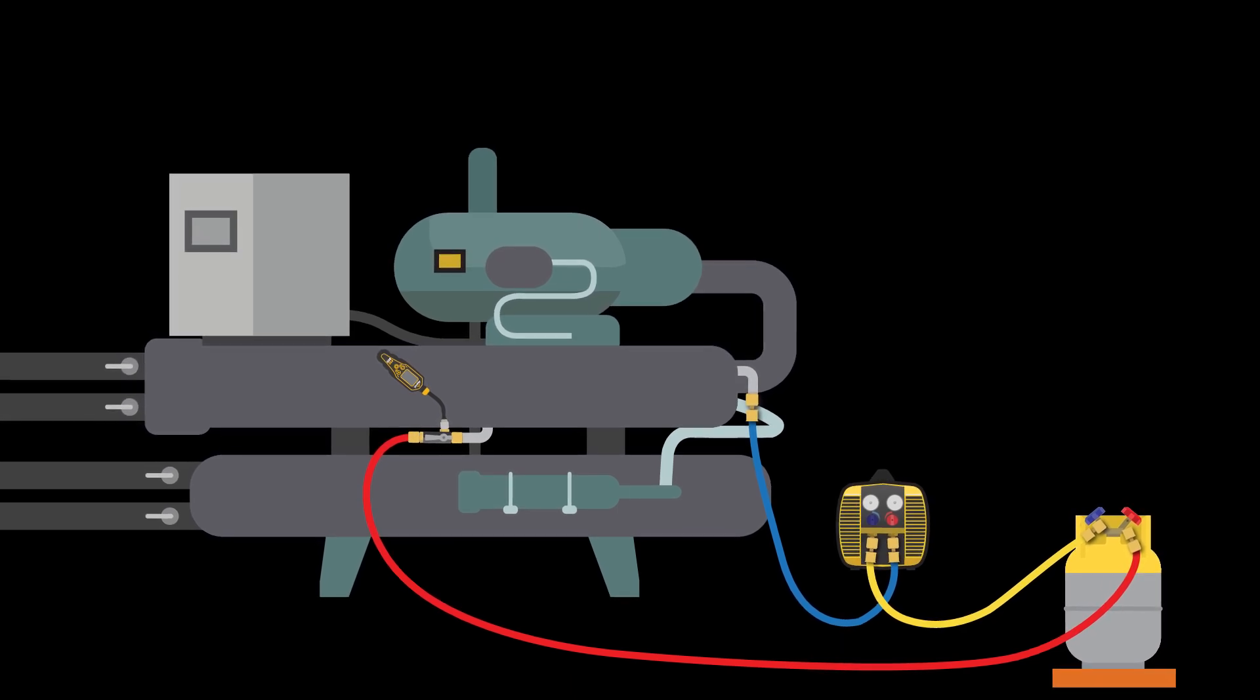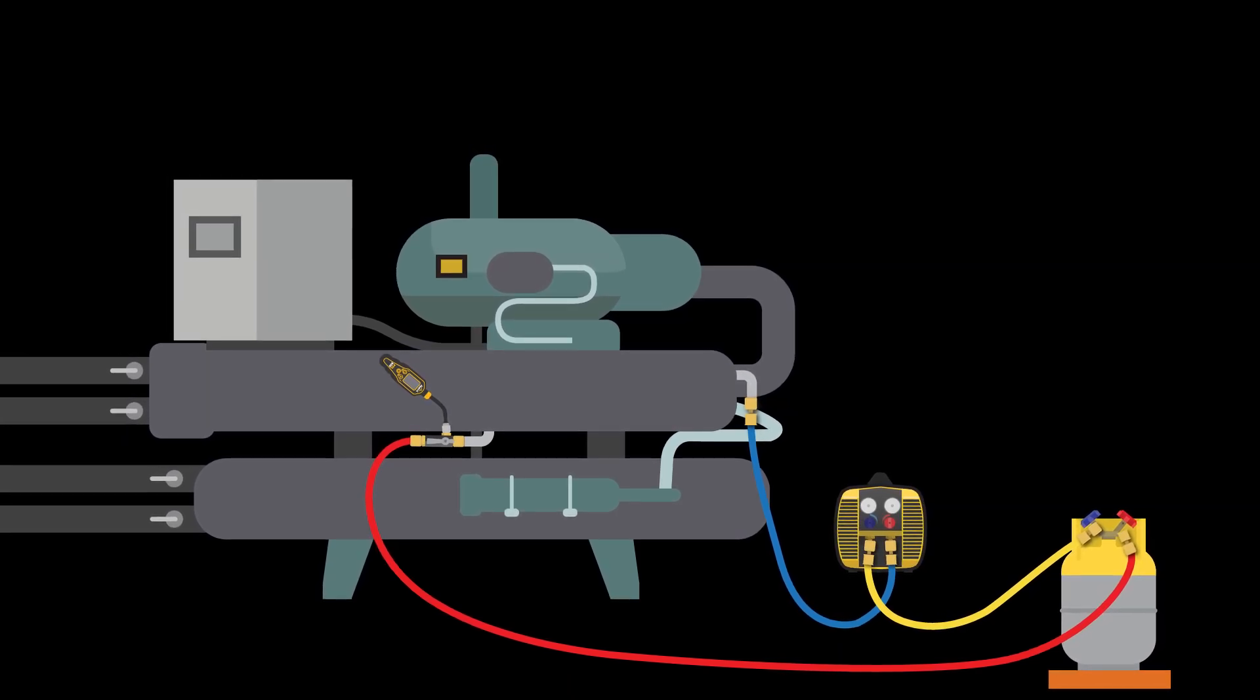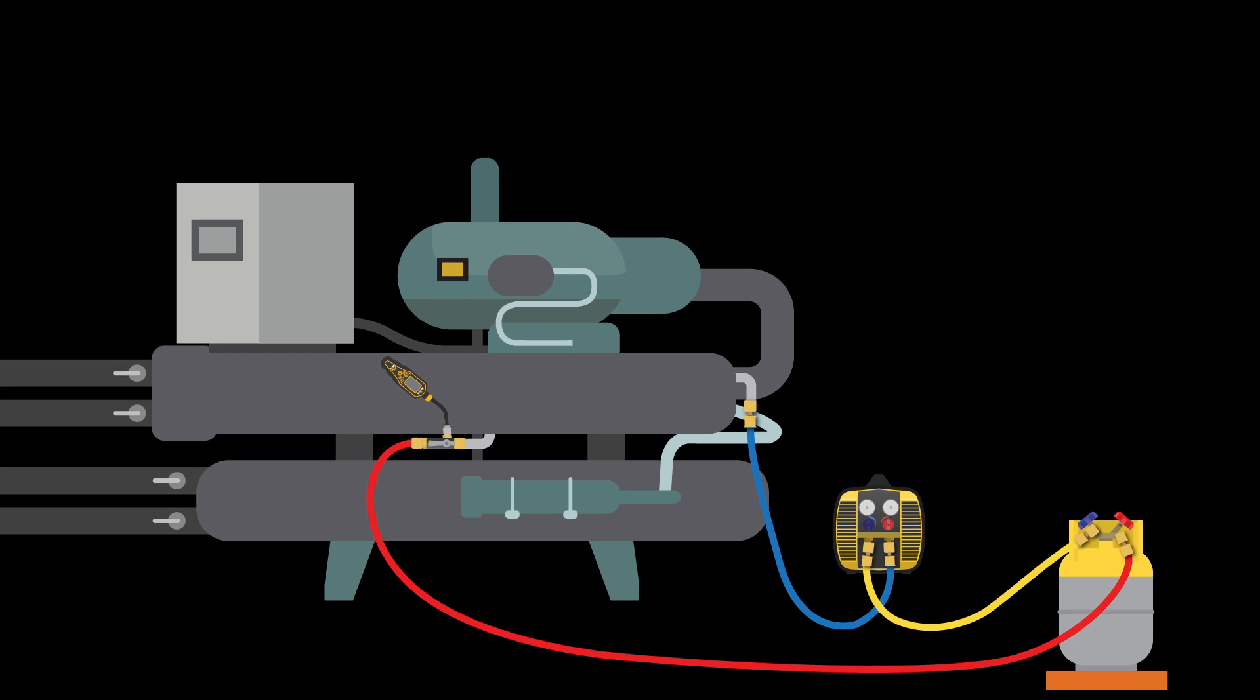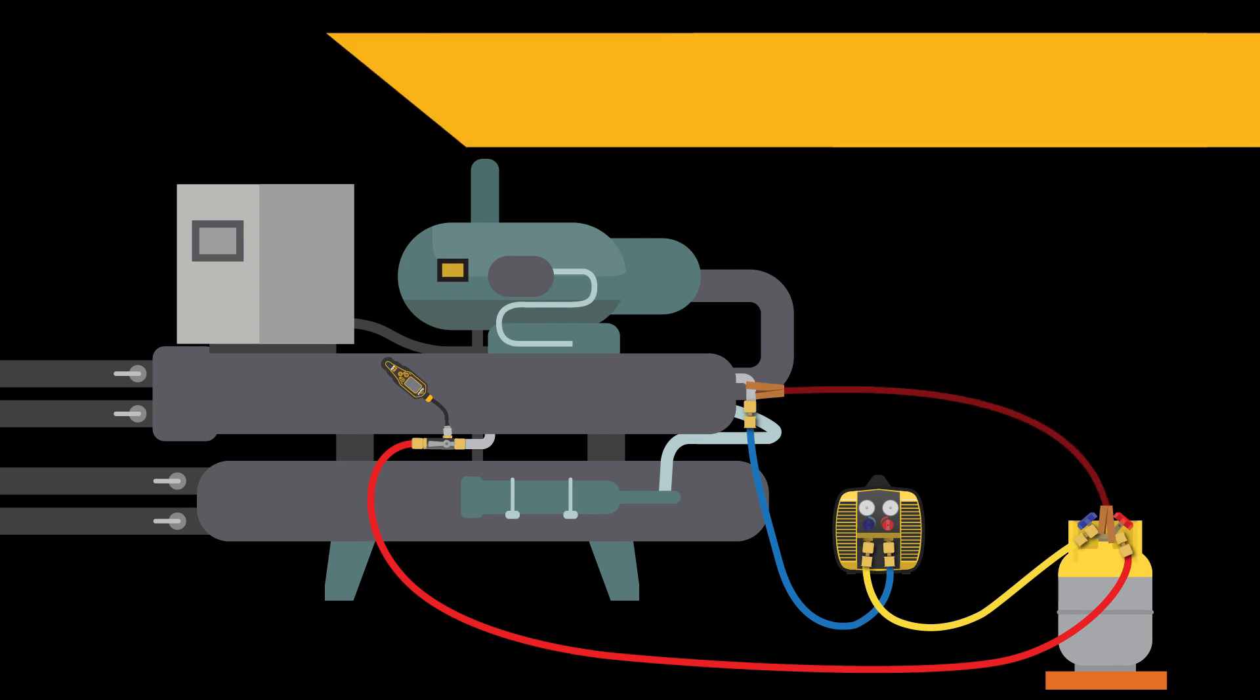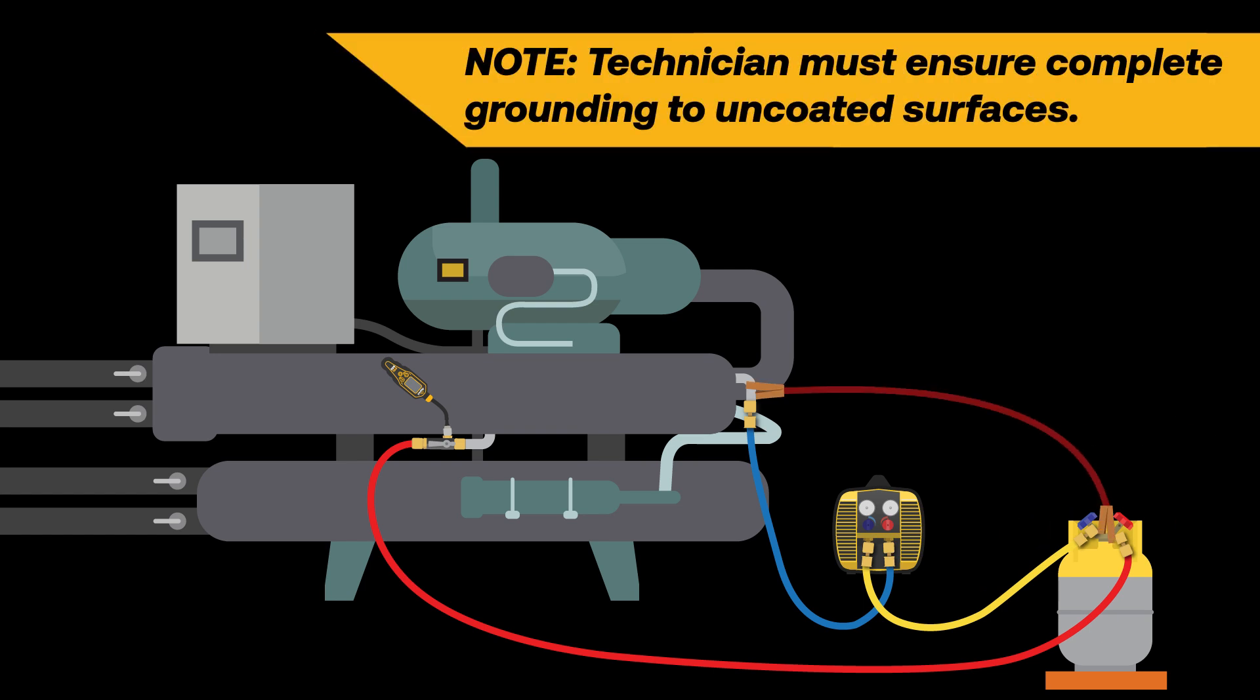When moving refrigerant at such a high speed, a transfer of electrons between the refrigerant and hose lining can occur. This often leads to a static charge building in the recovery cylinder. Attaching a grounding cable between the cylinder and a known good ground will allow this charge to dissipate before building to a state that could jeopardize your safety and the safety of those around you.